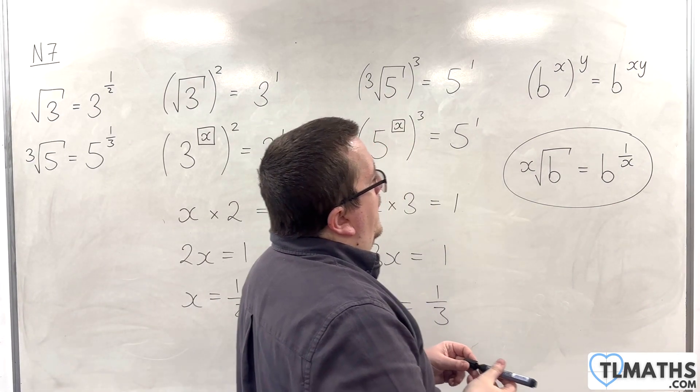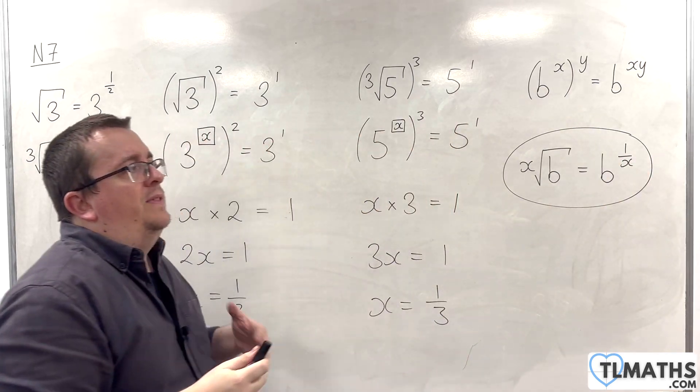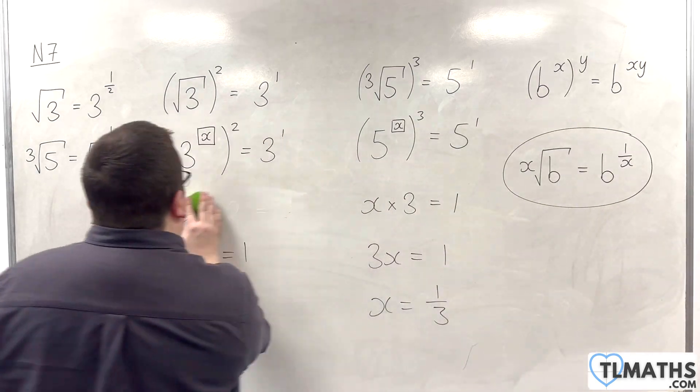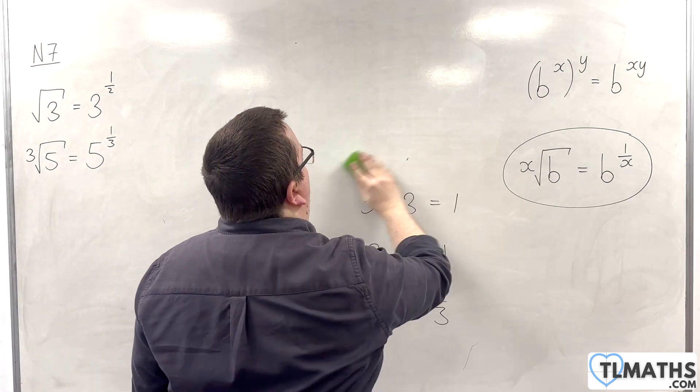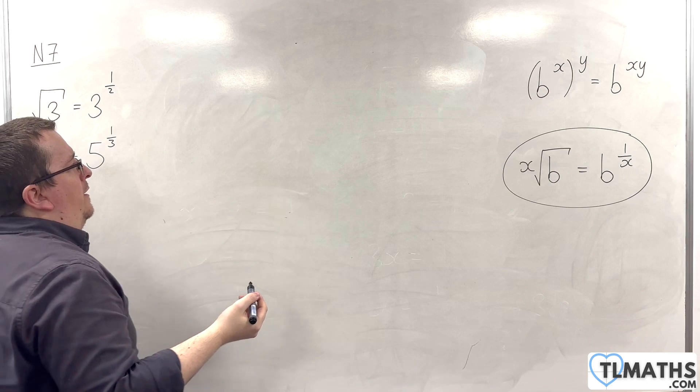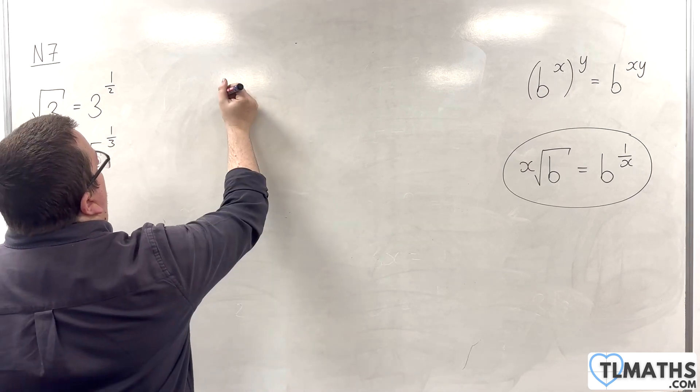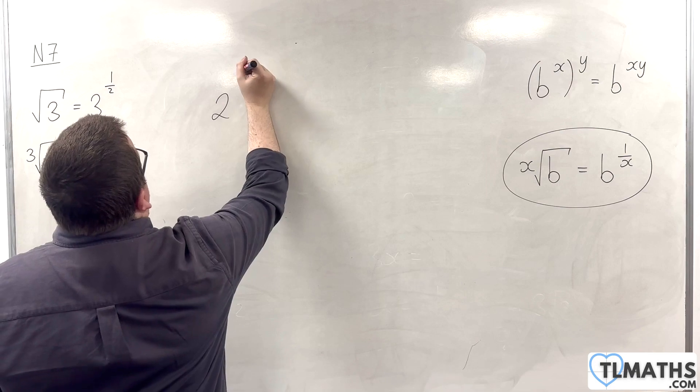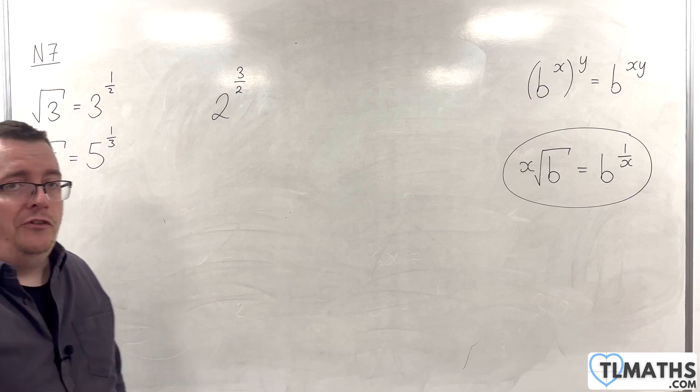Now, that begs the question as to what happens, then, if we've got something other than 1 in the numerator. Now, what does that mean? So, let's explore that. What about if I had something like, let's go with 2 to the power of 3 halves. What could that possibly mean?